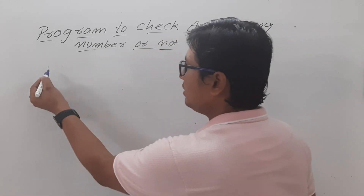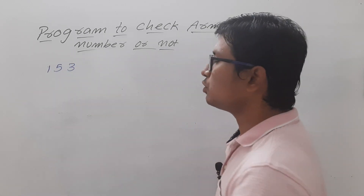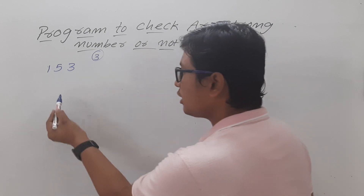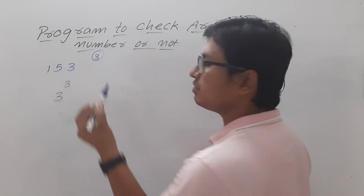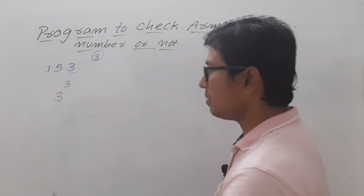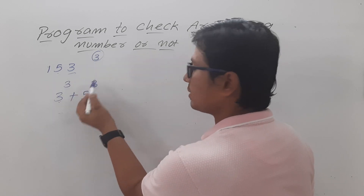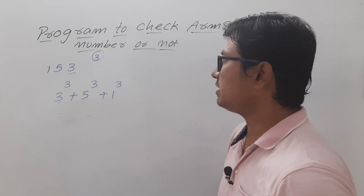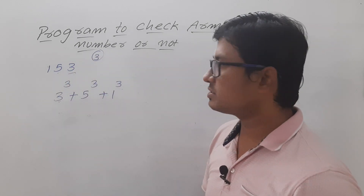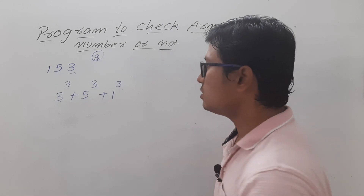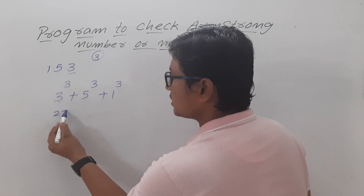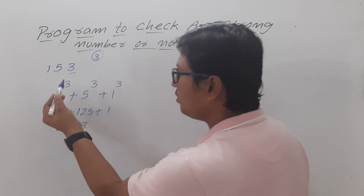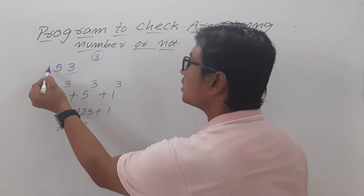Let me take a simple example: the number 153. The first step is to compute the number of digits — there are three digits. Now take each individual digit and compute: digit raised to the power of the number of digits. So 3³ + 5³ + 1³ = 27 + 125 + 1 = 153.